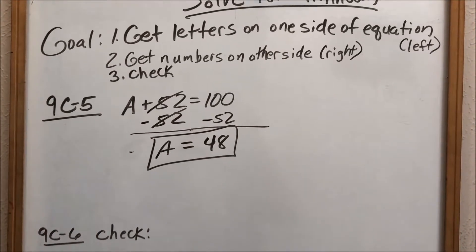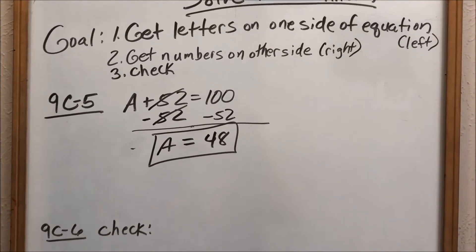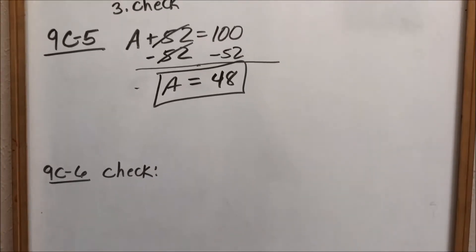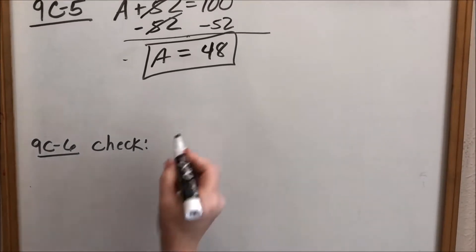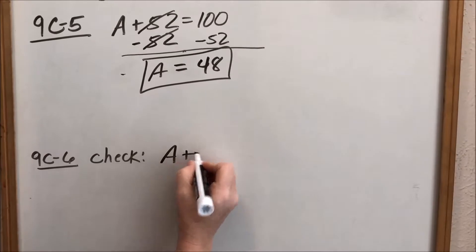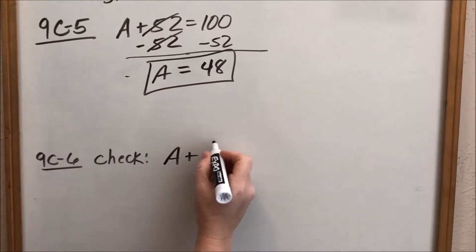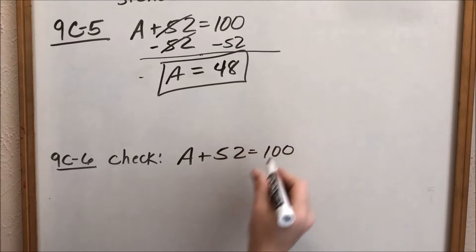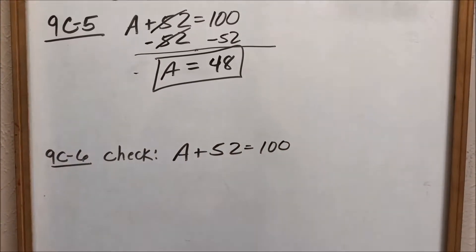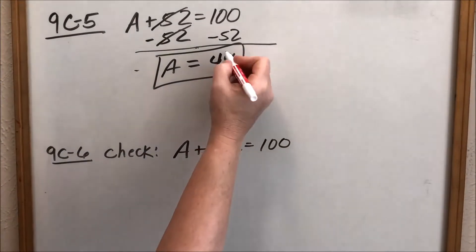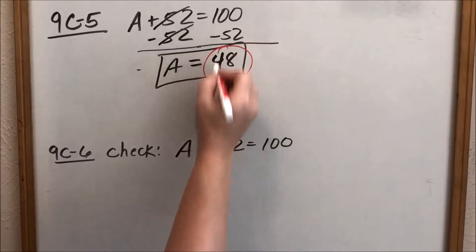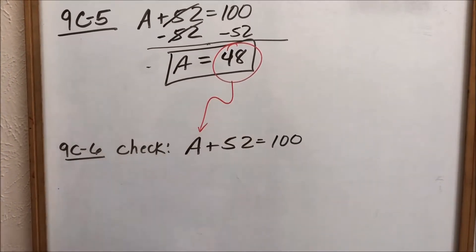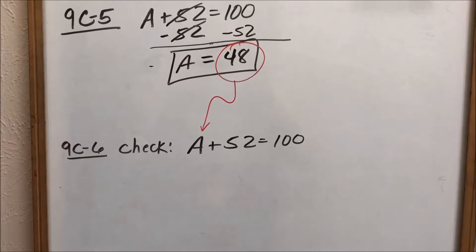The next step is to check it. When we check it, I recommend rewriting the original equation. So this is 9C number six. When you check it, I recommend rewriting your original equation. We said A is 48, so I take my answer and everywhere I see an A, I replace it with 48.